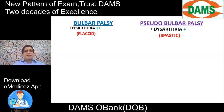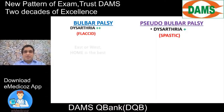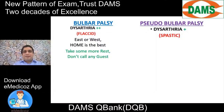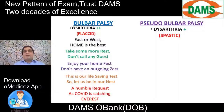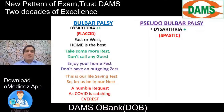A person with flaccid dysarthria has slurring of speech due to difficulty moving the tongue, so words are poorly articulated. A person with spastic dysarthria has a stiff, spastic tongue producing a different quality of speech, with difficulty articulating words properly.